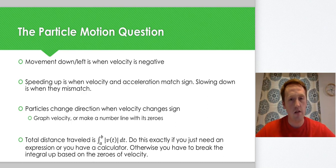Total distance traveled is the integral of the absolute value of velocity. And if you have a calculator or they're just asking for an expression for the total distance traveled, that is exactly what you'll do. Only when you have to do it by hand are you going to find the zeros of velocity and break up the integral at those zeros.